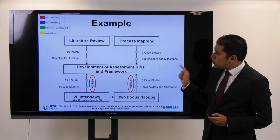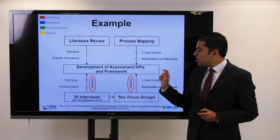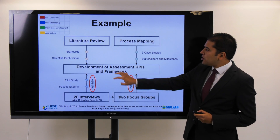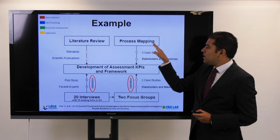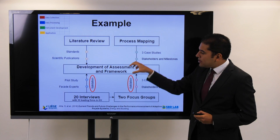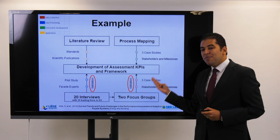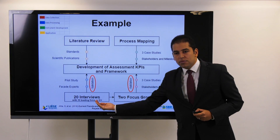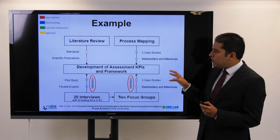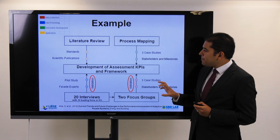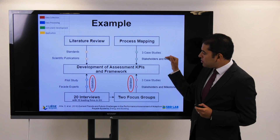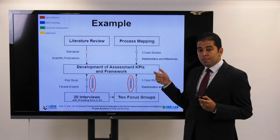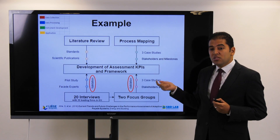This is another example where, in this research, we tried to develop a framework. Simply to develop the framework, we did a literature review, we did a process mapping, which fed the development. And finally, we validated it through focus group discussions and interviews. This is an example to explain very briefly how a research was done in a visual way, supported by sub-activities to explain to the reader or the reviewer what this research is about.